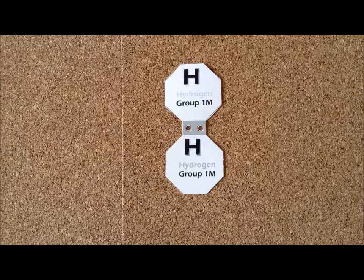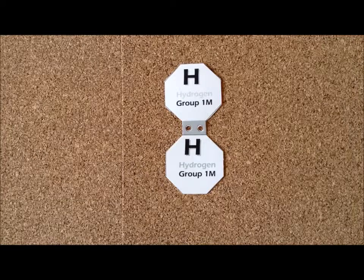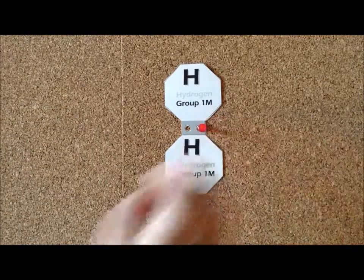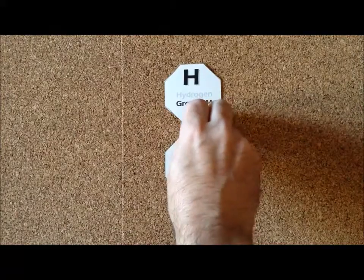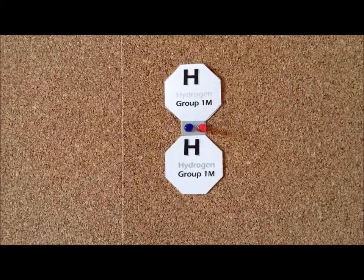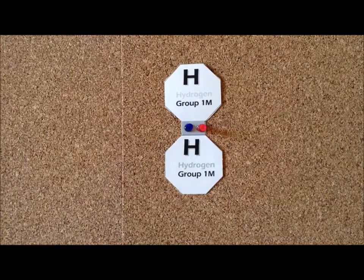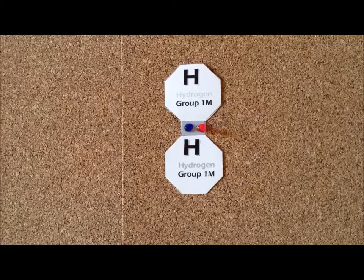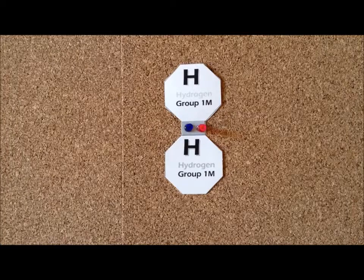We can share them between the two in the form of a single bond and thereby satisfy the duet rule for both of the hydrogen atoms. And we predict that this particular species, H2, will be stable. And it is.